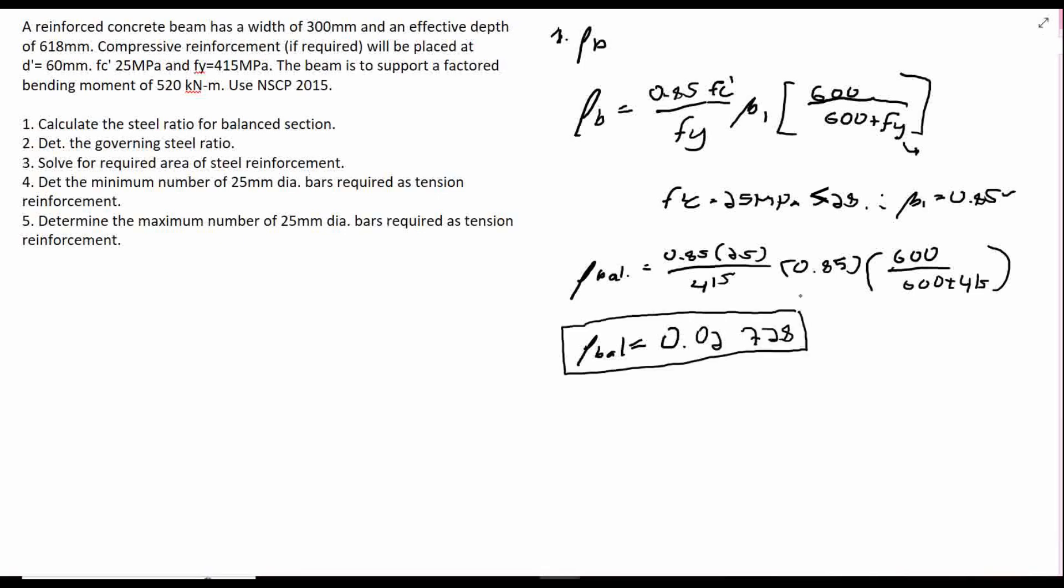Number 2, determine the governing steel ratio. We have our number 2. Let us solve for the ρ by using M_u, where we can get the R_n. We can get the ρ_AS.